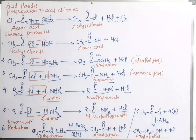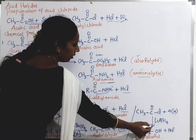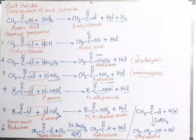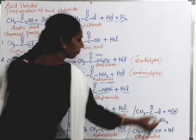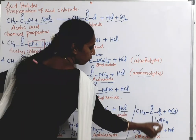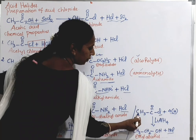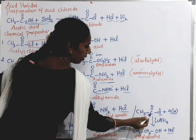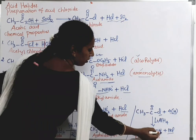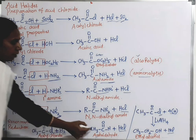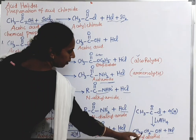Another reduction reaction: the same acetyl chloride undergoes reduction using lithium aluminium hydride (LiAlH4) as the reducing agent, with addition of 4 hydrogen atoms. One hydrogen and Cl are removed as HCl, and the remaining 3 hydrogen atoms are added, giving CH3CH2OH — ethanol is formed. So there are two reduction reactions: Rosenmund reduction forms aldehyde, and LiAlH4 reduction forms alcohol.